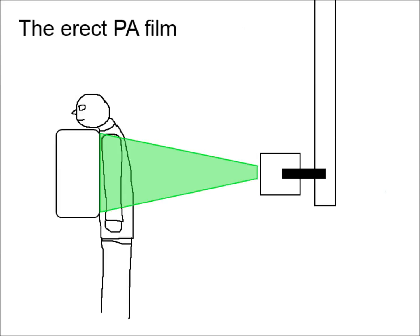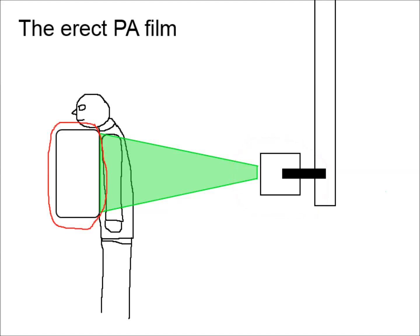Now, using my outstanding artistic talents and a bit of MS Paint magic, I'm going to briefly demonstrate how a PA film is taken. This is the x-ray beam emitter, which fires a cone-shaped beam of radiation towards the patient. And this is the cassette, where the x-rays are absorbed, some magic happens and a picture is made. Honestly, I don't know exactly how it works.